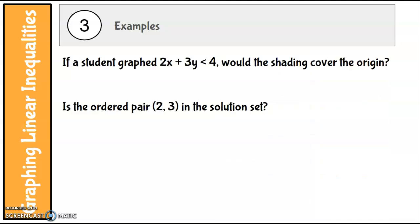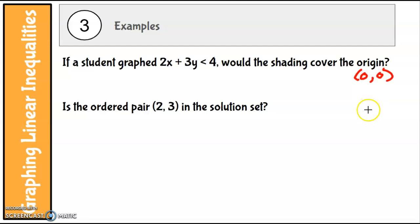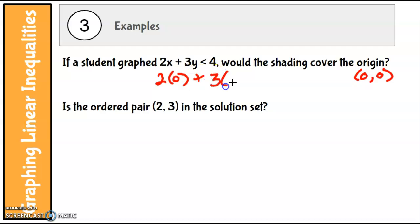One last example to ponder: if a student graphed 2x plus 3y is less than 4, would the shading cover the origin? First, remember the origin is (0, 0). The shading means those are solutions to the inequality, so the question is actually asking: is (0, 0) a solution? Without graphing, we can just put 0 in for x and 0 in for y and see if it's a solution.